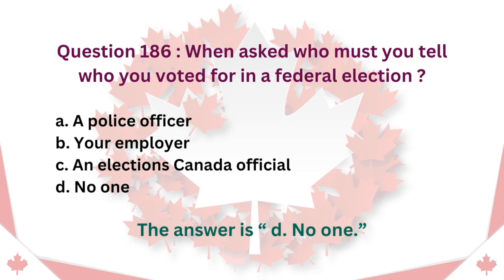Question 186: When asked, who must you tell who you voted for in a federal election? A. A police officer. B. Your employer. C. An Elections Canada official. D. No one. The answer is D. No one.